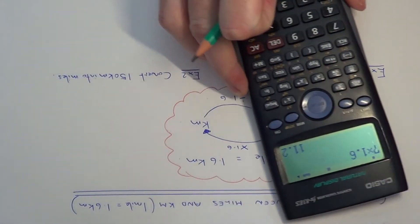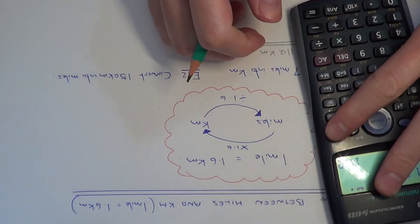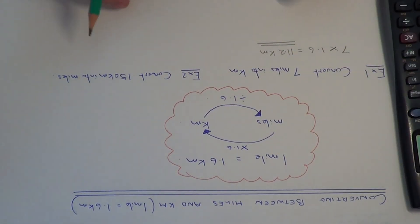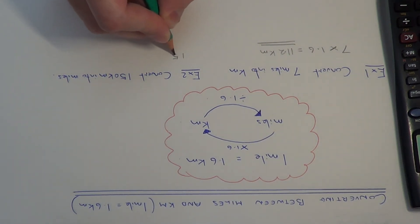So let's move on to example two. So this time we need to convert 150 kilometres into miles. So kilometres back into miles we divide by 1.6. So on our calculator we type in 150 divided by 1.6.